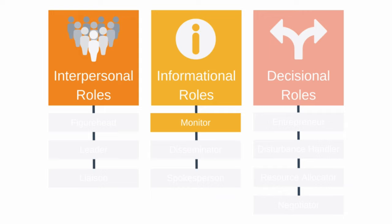Next, we move on to informational roles. The roles within this category concern how you collect and share information. The first is monitor. You need to monitor the work of your team and also what's going on elsewhere in your organisation, identifying which information is important and which is not. Note that this information doesn't have to be factual — you can also monitor gossip and speculation. Examples include having a conversation with a member of your network, doing online research, or reading your company's reports.